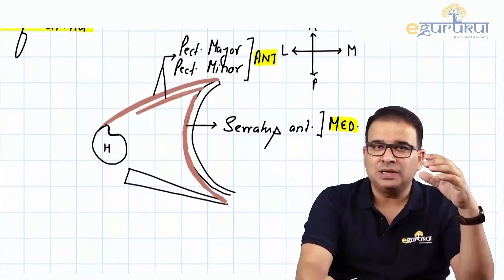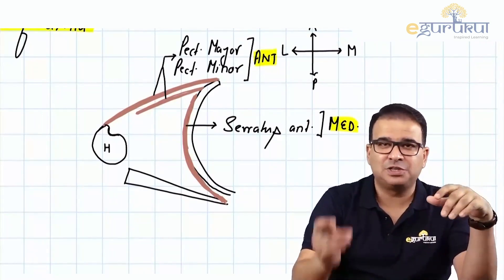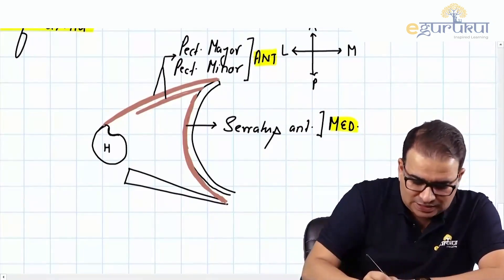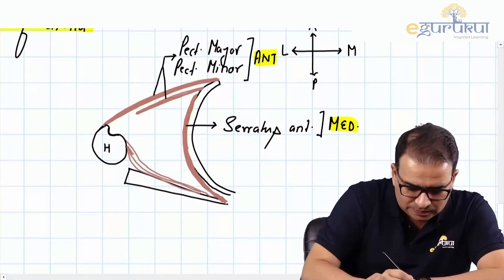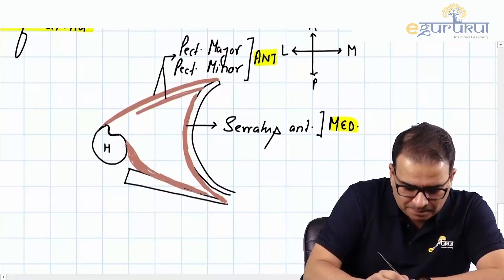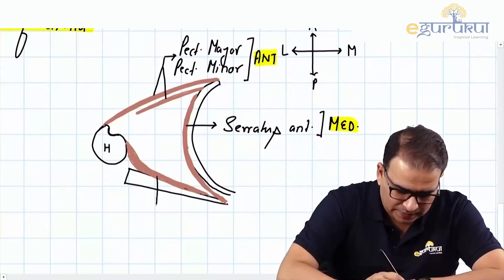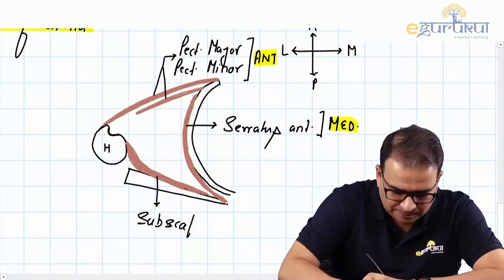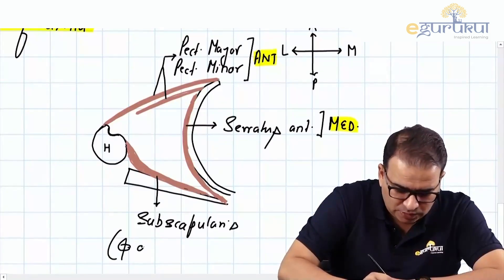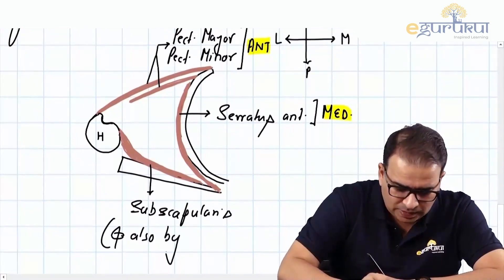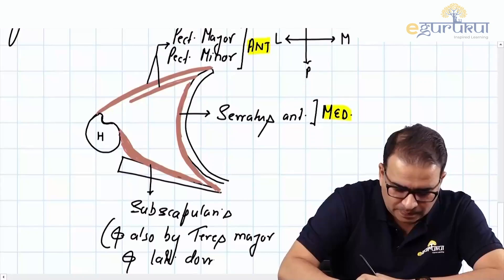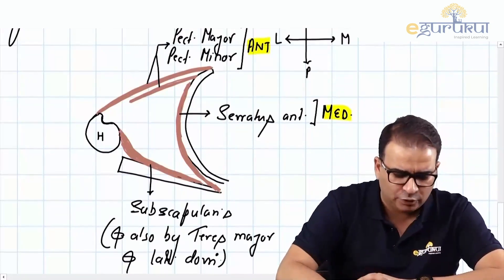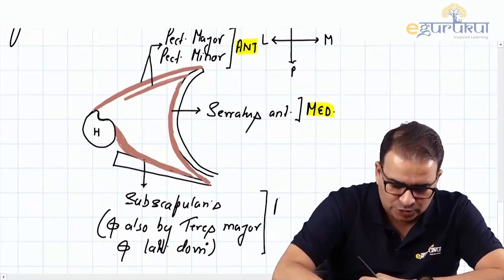The posterior wall is formed by subscapularis, latissimus dorsi, and teres major. However, we cannot see all three muscles in the same section because they are arranged one below the other. The muscle seen here is the subscapularis, which attaches to the lesser tubercle — medial to the bicipital groove. So this is the subscapularis muscle forming the posterior wall. Also contributing, although not visible in this picture, are teres major, which is below that, and latissimus dorsi — both contributing to the posterior wall in the lower part, but the main focus is subscapularis.